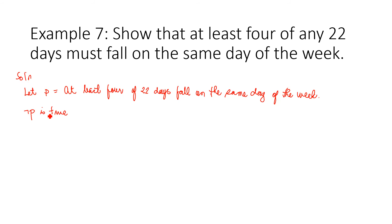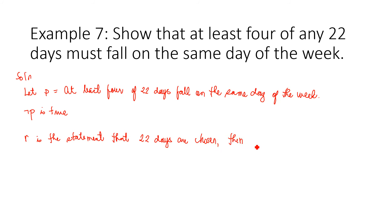This contradicts the premise that we have 22 days under consideration. That is, if r is the statement '22 days are chosen,' we have shown that not p implies (r and not r). Consequently, we know that p is true. We have proved that at least four of the 22 chosen days fall on the same day of the week.